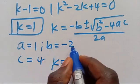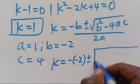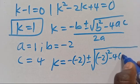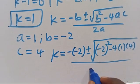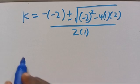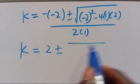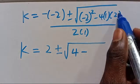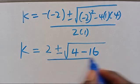Plugging in, we get K equals minus of minus 2, positive or negative, square root of minus 2 in parentheses to the power of 2, minus 4 times A which is 1, times C which is 4, all divided by 2 times 1. So K equals 2 positive or negative, square root of 4 minus 16, divided by 2.